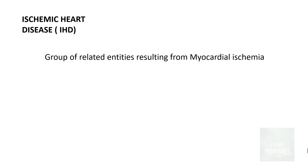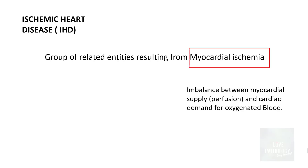By definition, ischemic heart disease refers to a group of related entities resulting from myocardial ischemia. Myocardial ischemia means there is an imbalance between the myocardial supply, which is perfusion, and cardiac demand for oxygenated blood. That's what is referred to as myocardial ischemia.